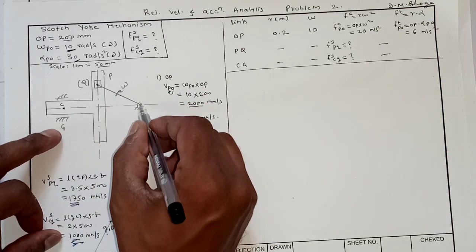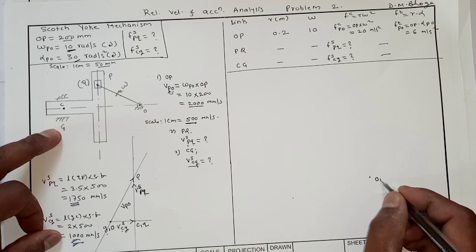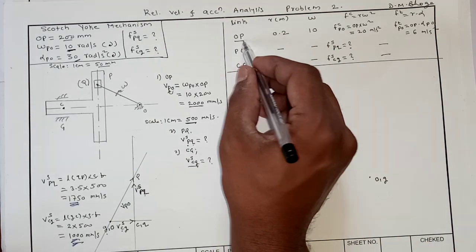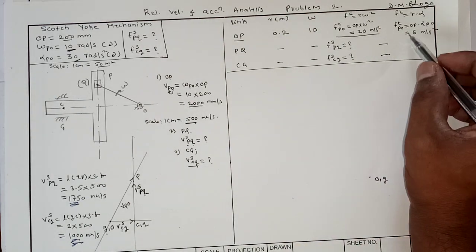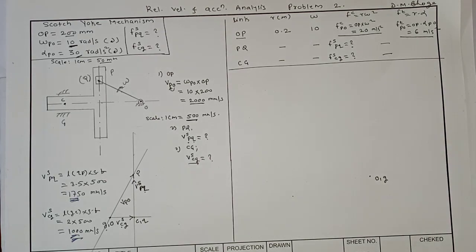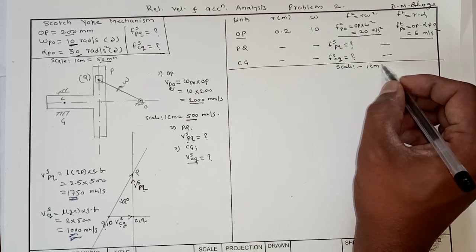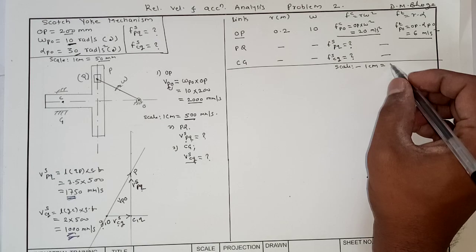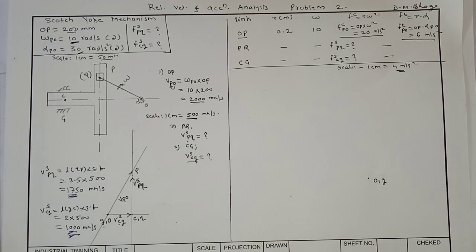For the acceleration polygon, the fixed link GO has zero acceleration, so I plot point O-G as a zero-length vector. The next link is OP. We plot FC_PO which equals 20 meters per second squared, and add FT_PO which is 6 meters per second squared. We take a scale of 1 centimeter equals 4 meters per second squared.